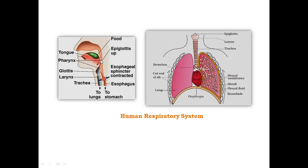The pharynx opens into the trachea. In the trachea there is a box-like structure known as the larynx — a sound box or voice box which produces sound. This is a cartilaginous structure.